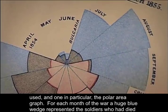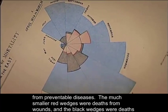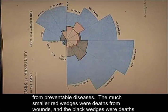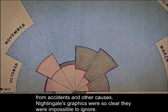For each month of the war, a huge blue wedge represented the soldiers who had died from preventable diseases. The much smaller red wedges were deaths from wounds, and the black wedges represented deaths from accidents and other causes.